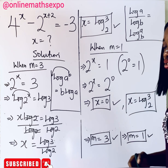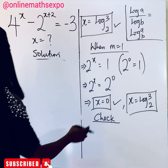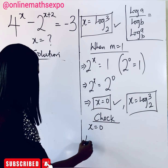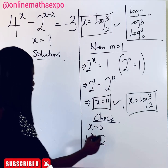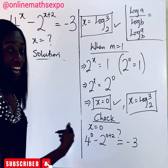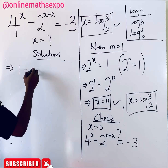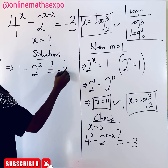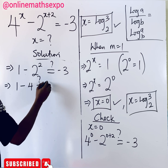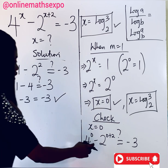Let's verify these two values. For when x equals 0, we substitute into the original equation: 4 raised to the power of 0 minus 2 to the power of 0 plus 2. Any number to the power of 0 is 1, so this becomes 1 minus 2 to the power of 2. Since 2 to the power of 2 is 4, we get 1 minus 4, which equals negative 3. This confirms x equals 0 is correct.